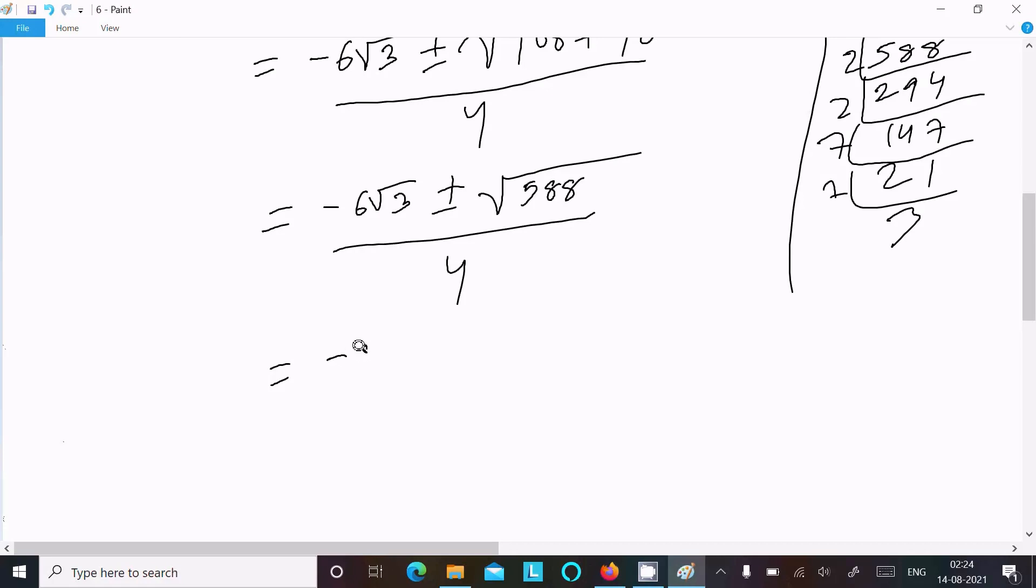So this here we can write as -6√3 ± √(7² × 2 × 2 × 3). So 7² is 49, and we can simplify this as 7 × 2√(2 × 3) = 14√6.